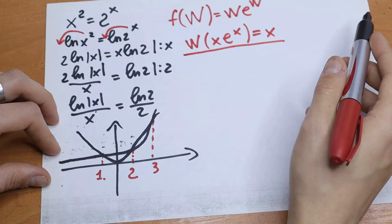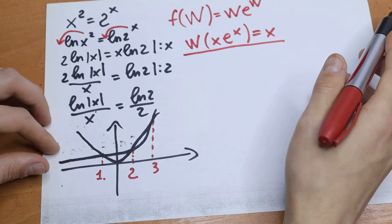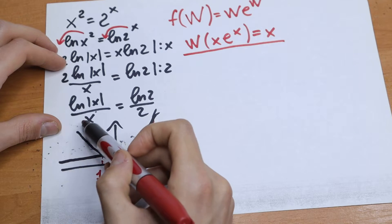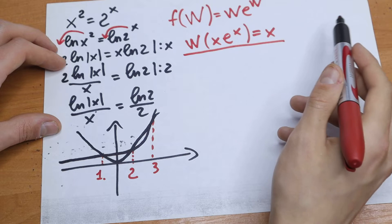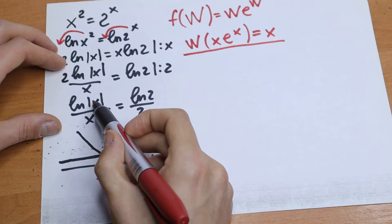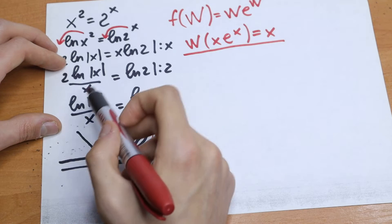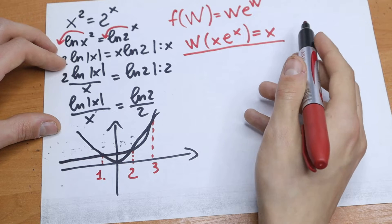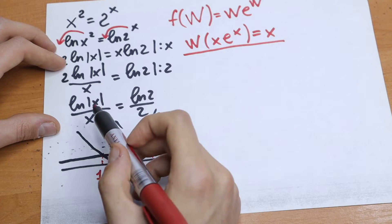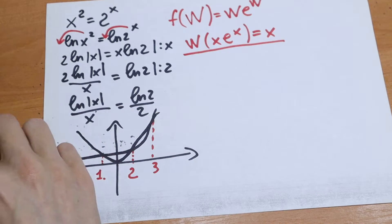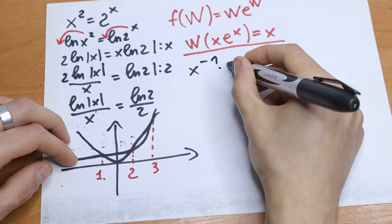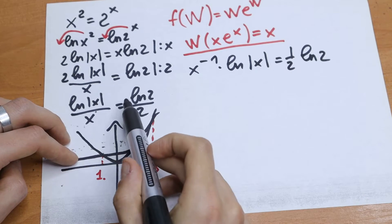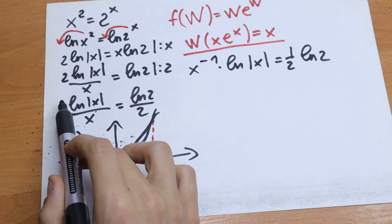I want to explain this in simple words, because maybe some students or school students are watching this video. We need to create something of the form x·e^x and then we can write it as x using the Lambert W function. It's hard to simplify because x is inside a natural log and also in the denominator. So we need to bring x to the minus one power.